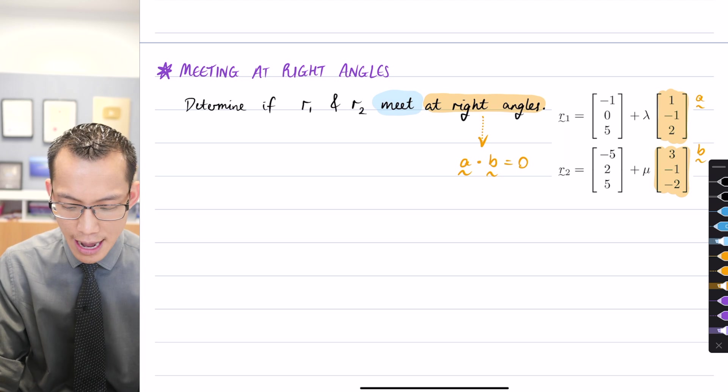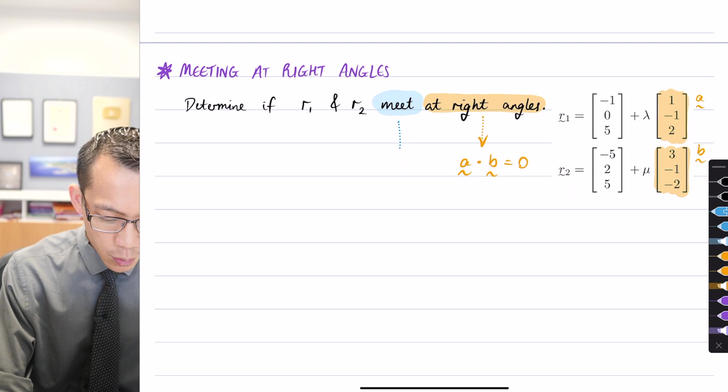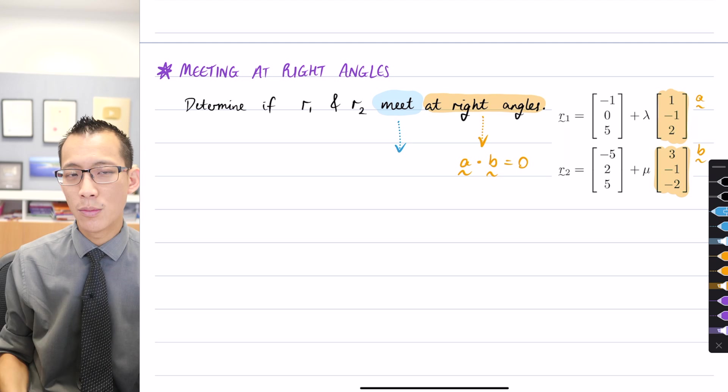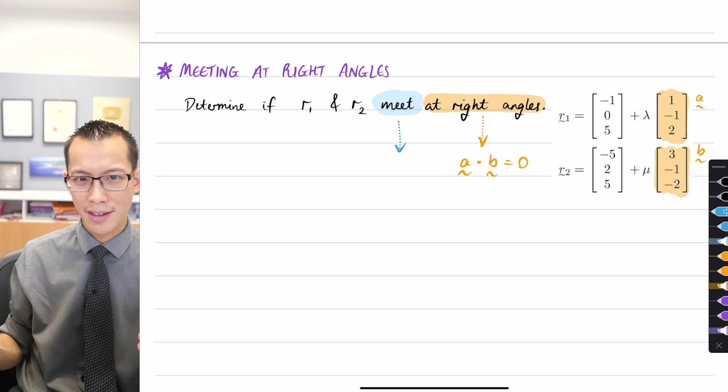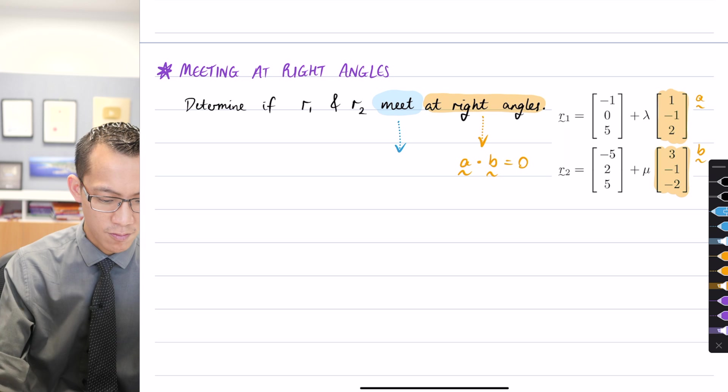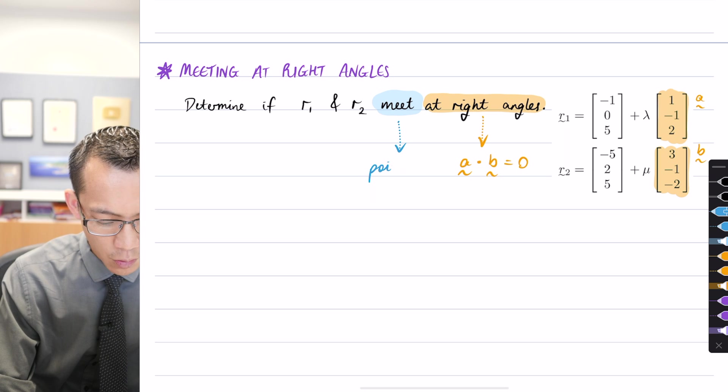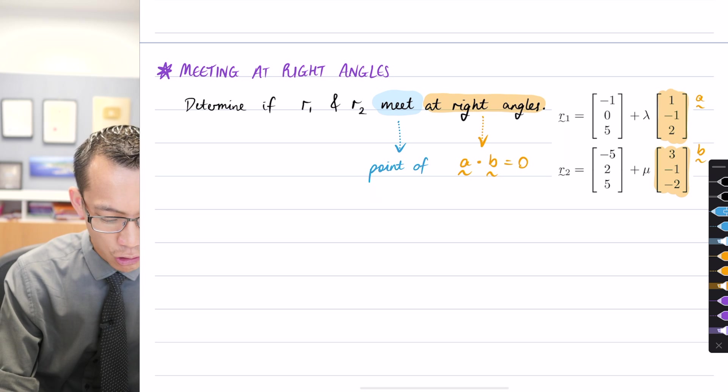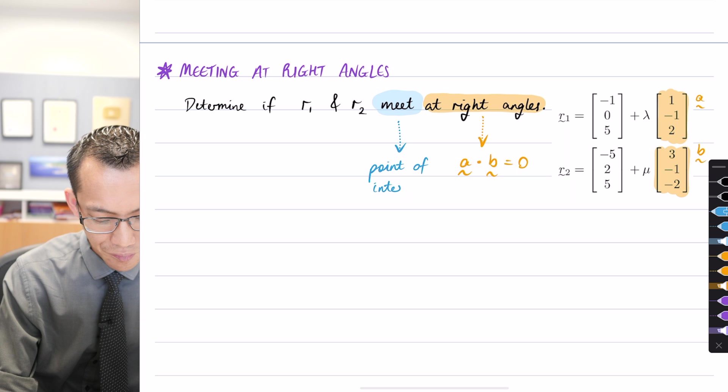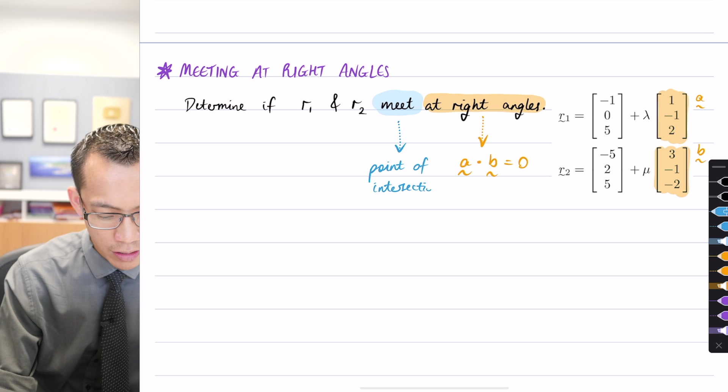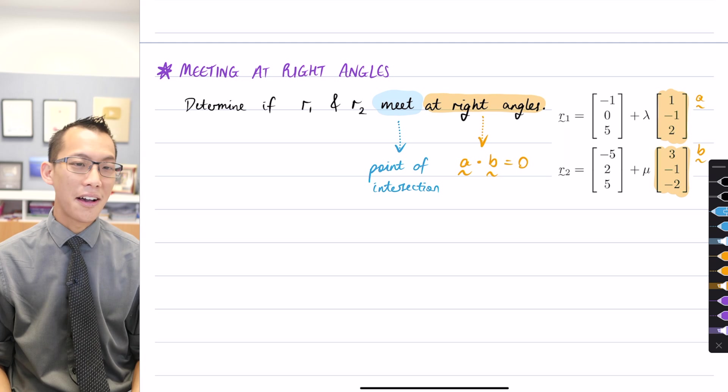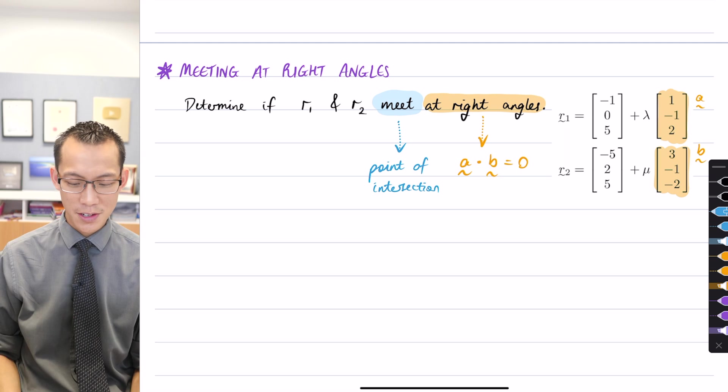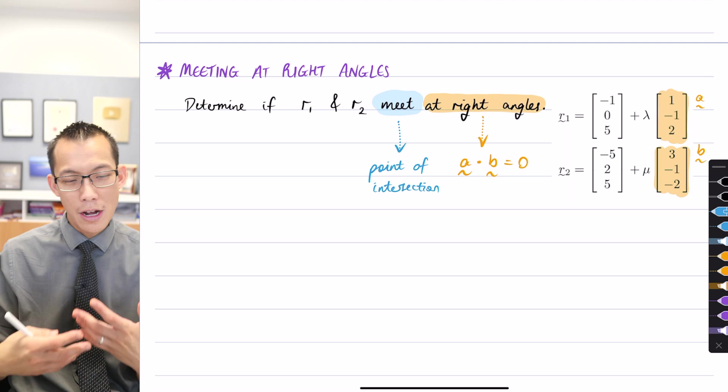What we actually need to do as a secondary thing is we have to talk about do the lines meet. We are going to have to try and find a point of intersection. We will either find a point of intersection or we won't, and so this is what is going to tell us firstly whether they meet and then secondly at right angles.